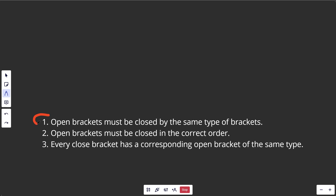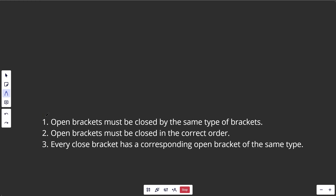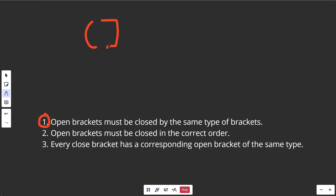Here are the three rules we'd have to satisfy — if any of them breaks, you automatically return false. For rule one, open brackets must be closed by the same type of brackets. Here we opened with a circle bracket, but we actually closed with a square bracket instead. So this breaks rule number one and we'd return false.